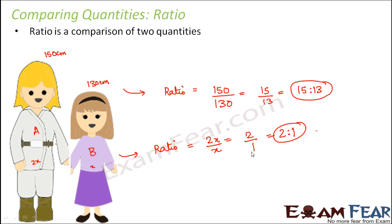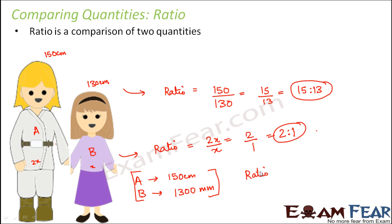Sometimes it might happen that the units are different. For example, the height of A is 150 cm and the height of B is 1300 mm. You might think the ratio would be 150 divided by 1300, but that's not the case because one height is in centimeters and the other is in millimeters. We can only compare two quantities which are in the same unit. So you might find that 150 cm is actually greater than 1300 mm.